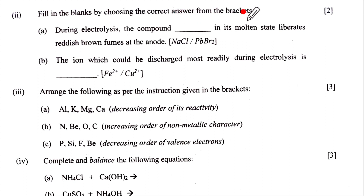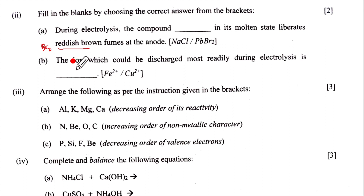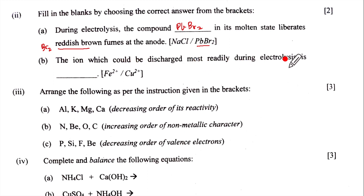Fill in the blanks by choosing the correct answer from the brackets. During electrolysis, the compound in its molten state liberates reddish-brown fumes at the anode. Reddish-brown fumes mean Br₂ vapors, so the compound with bromide as the negative radical is PbBr₂. For part B, the ion discharged most readily during electrolysis is the one lower in the electrochemical series — copper is much below iron, so it will be Cu²⁺.